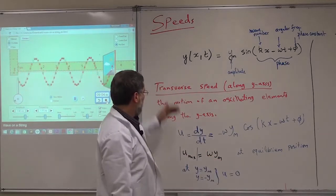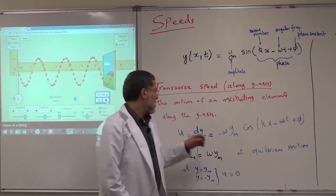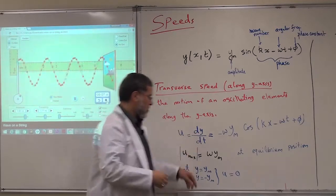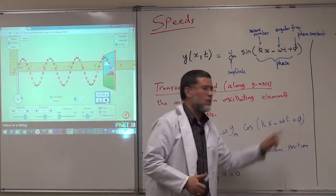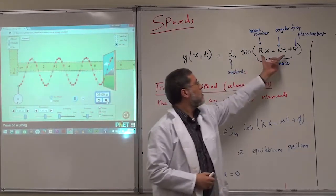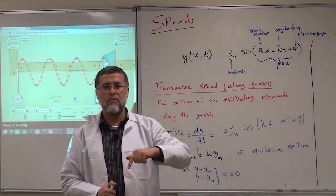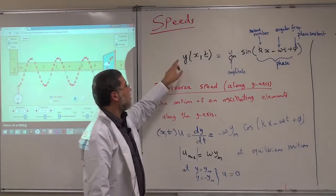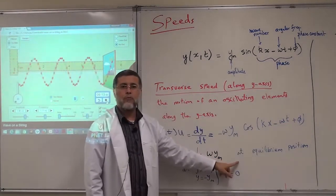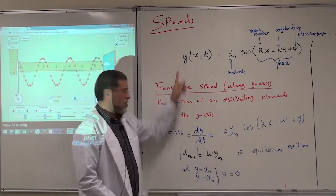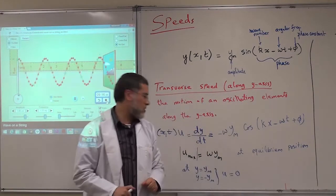We talked about the transverse speed or transverse velocity of the particles — this is the velocity of the particles which are moving up and down. We have seen that this is the equation of the transverse velocity, u of x and t. x is a variable and t is a variable. It's important to know that this is a sine and this is a cosine, and there's a phase shift of pi over 2 between sine and cosine. When one is maximum, the other one is zero. So when y is zero, the sine is zero, the cosine will be maximum, and this is why u will be maximum at the equilibrium position.